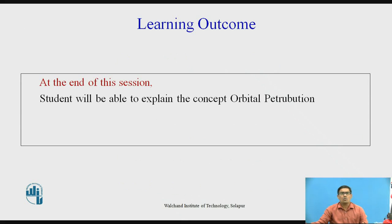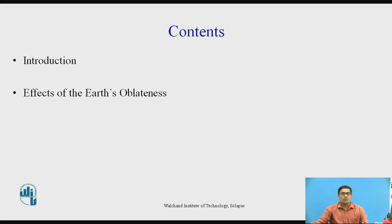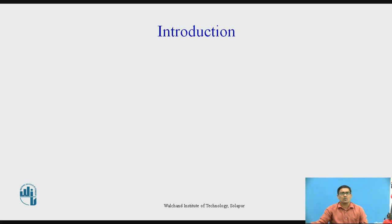The learning outcome of this topic is: at the end of the session, students will be able to explain the concept of orbital perturbation. The contents of these topics are: first we see the introduction, in that what is the meaning of perturbation. Then we want to see effects of earth's oblateness, and after that we want to see what will happen if inclination changes. So we want to see them one by one, starting with the introduction.